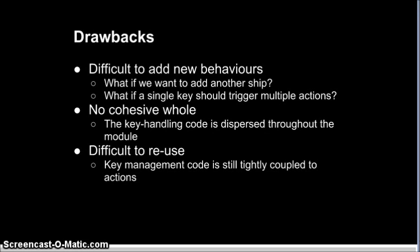Moving on — these are the drawbacks for the implementation I created in Part 1. First of all, it's difficult to add new behaviors, because we need to add new methods to handle setting new key bindings, and we need to update the labels, and so on. We can do it, but it's cumbersome. The key handling is spread throughout the code, which isn't great. Both of these issues make it difficult to reuse this code elsewhere — it should be easy to extract just the key handling code to use in another game, and what we're going to do is make it so that it is.